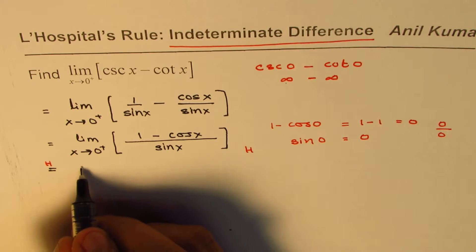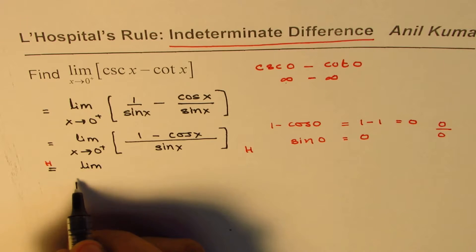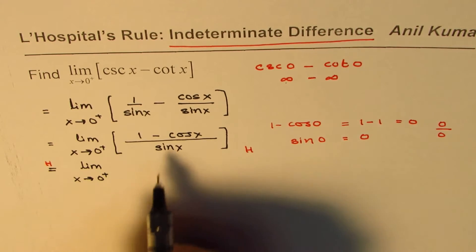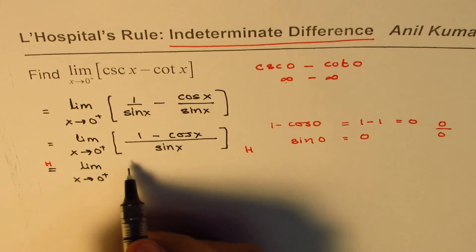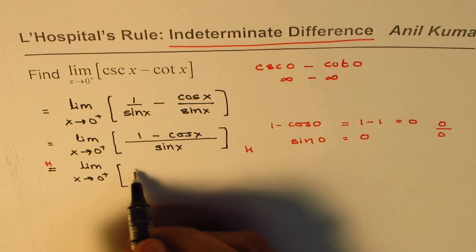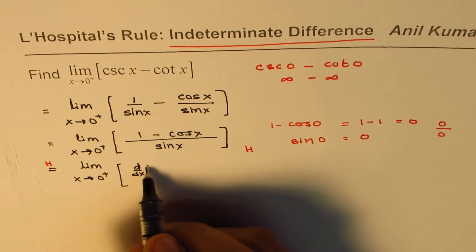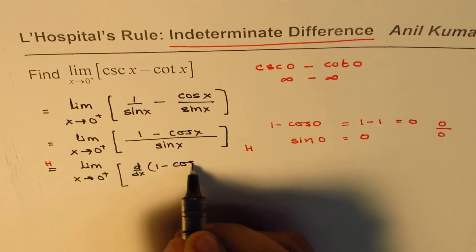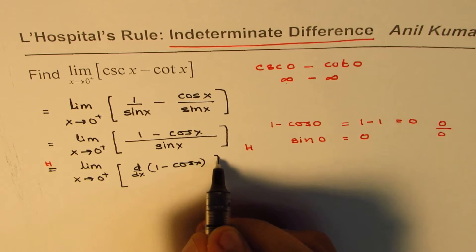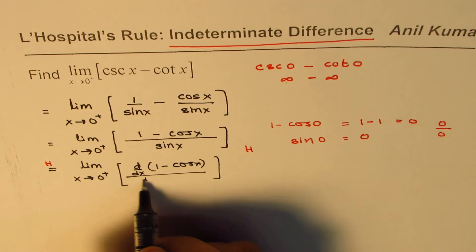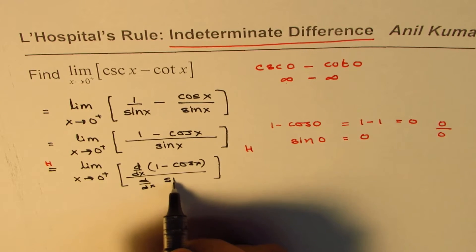So finally, what we have here is we have limit x approaches 0 plus. And we'll write down derivatives of numerator. So let me write d dx of 1 minus cos x divided by d dx of sine x.